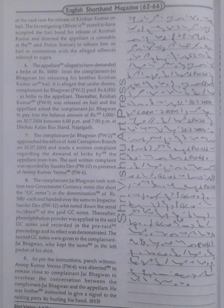The appellant allegedly demanded a bribe of Rs. 5000 from the complainant Jai Bhagawan for releasing his brother Krishan Kumar on bail. It is alleged that under duress, the complainant Jai Bhagawan (PW2) paid Rs. 4000 as bribe to the appellant.